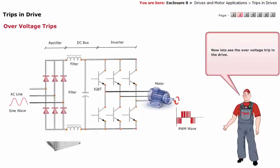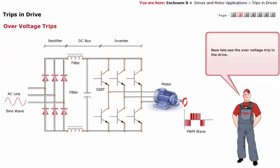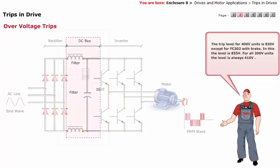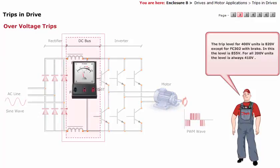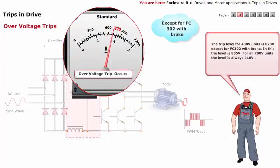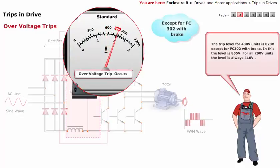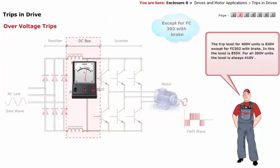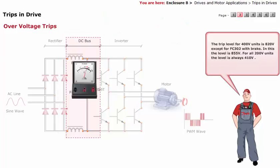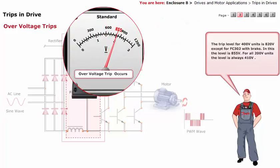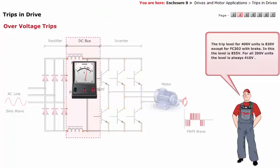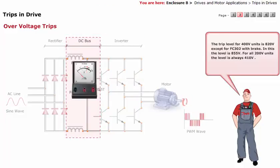Let's see the over-voltage trip in the drive. The trip level for 400V units is 820V, except for the FC302 with brake, where the level is 855V. For all 200V units, the level is always 410V.